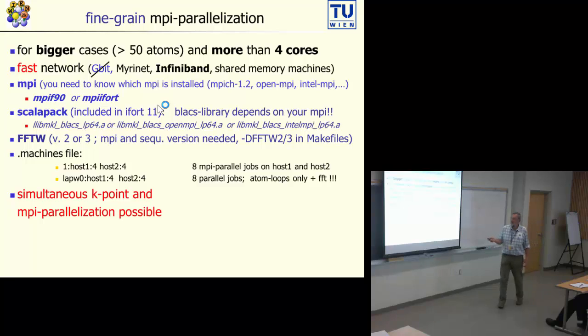You also need FFTW for fast Fourier transform. You can install this on your own, but you have to install also the MPI version of that.